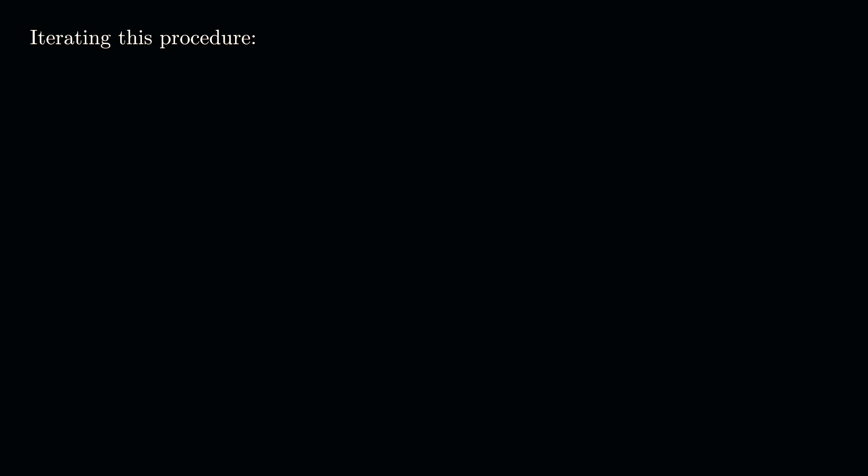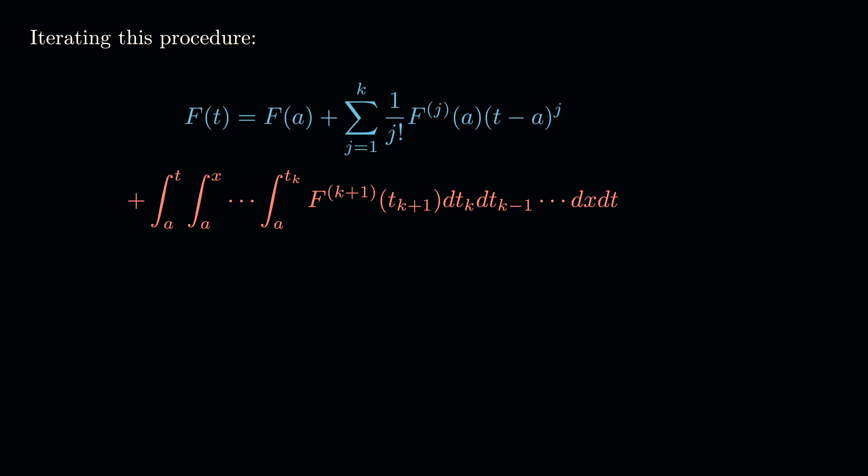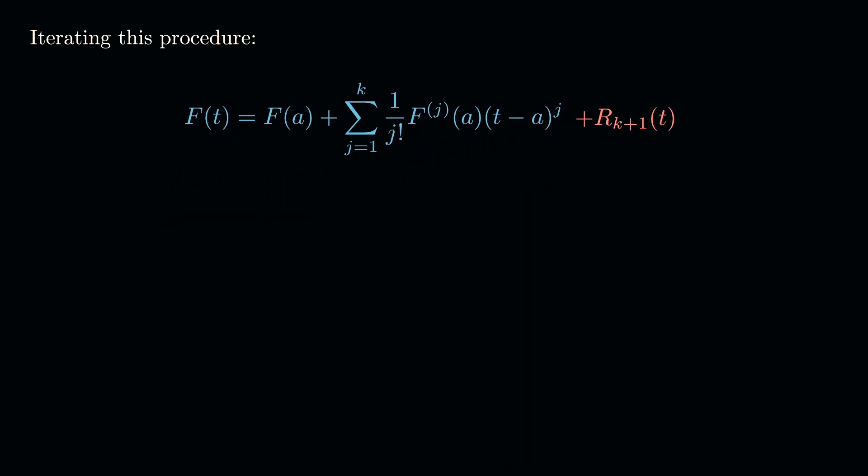We can iterate this procedure as many times as the function allows. If f is k times continuously differentiable, we do this k times and find: f(t) equals f(a) plus the sum from j equals one to k of one over j-factorial times the j-th derivative of f evaluated at a, times (t minus a) to the j, plus a remainder term R_k. And that's the proof of Taylor's theorem — given merely by the fundamental theorem of calculus. Arguably the simplest proof possible, and yet it's rarely taught, which is disappointing given how elementary and important it is.